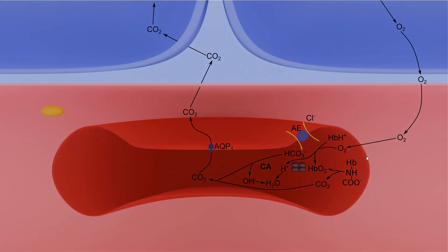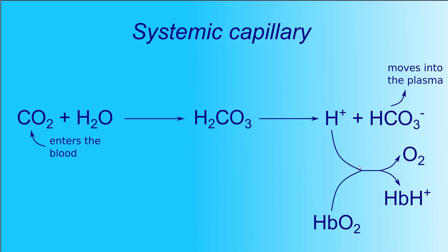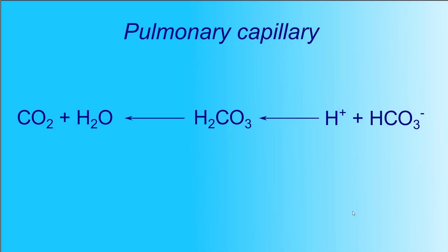In fact, carbon dioxide transport can be reduced to two sequential chemical reactions. In the systemic capillaries, these reactions occur in one direction; in the pulmonary capillaries, in the other. In systemic capillaries, the equilibrium shifts to the right as the concentration of products decreases. Bicarbonate ions are removed from red blood cells, and hydrogen ions bind to hemoglobin. Also, the amount of CO2 increases since it entered the plasma.